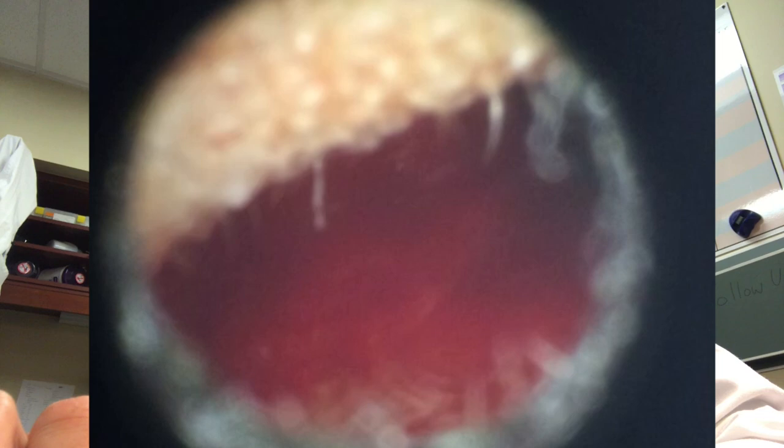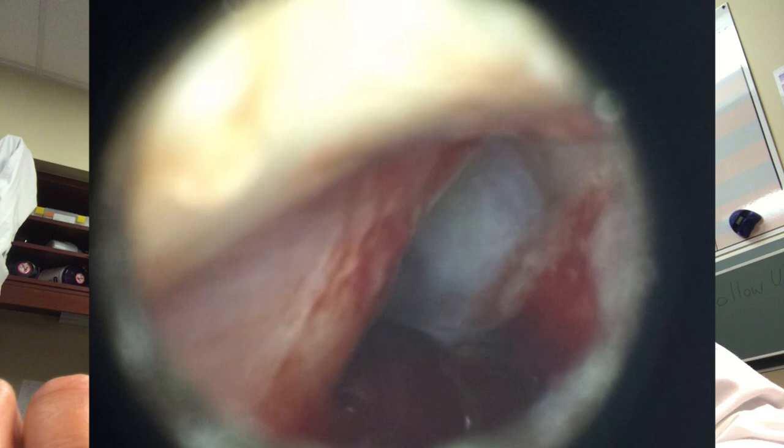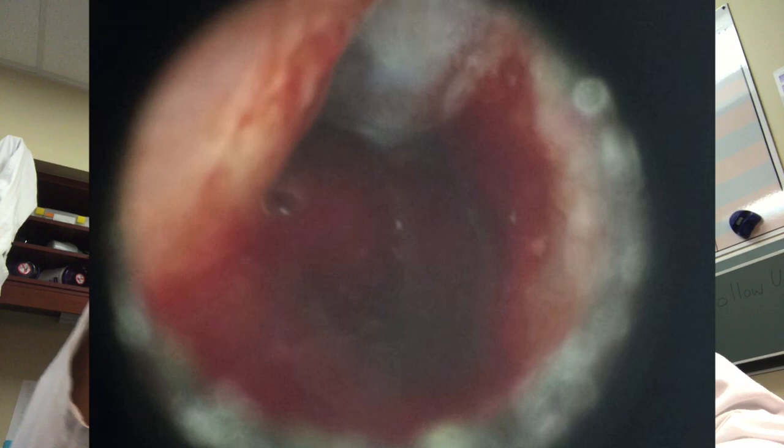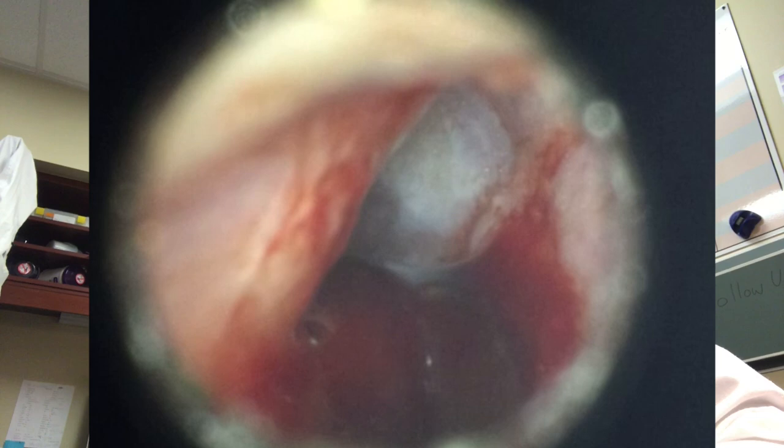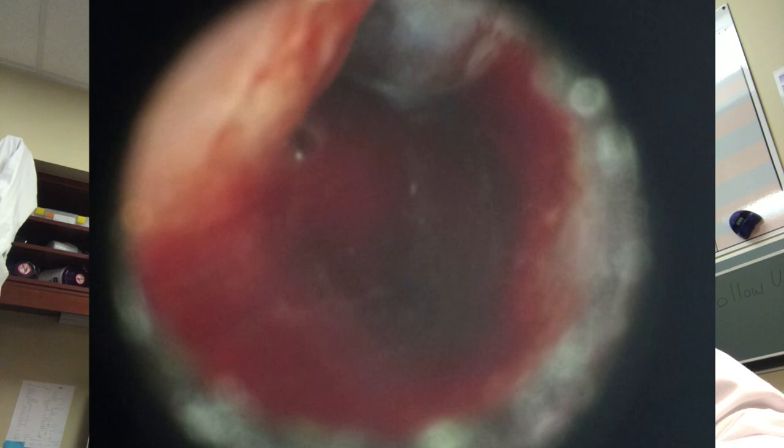The next patient had ear pain followed by bleeding coming out of the ear, so we expect to see a tympanic membrane perforation. As we go into the exam you can see blood in the canal, and going in further you can see the tympanic membrane but can't see all the way through — there's a big clot of blood at the bottom. A tympanic membrane perforation is a tear usually caused by infection, but it can also be caused by trauma or people digging in the ear.